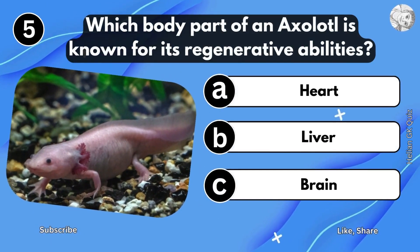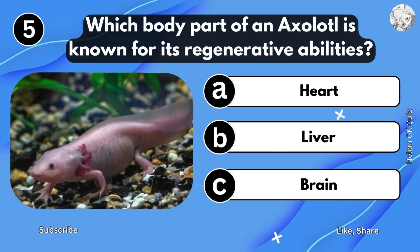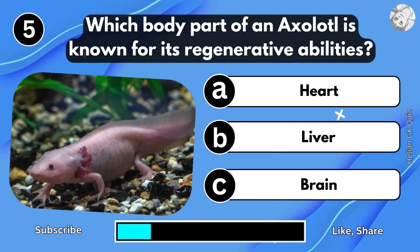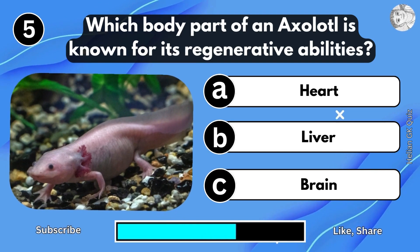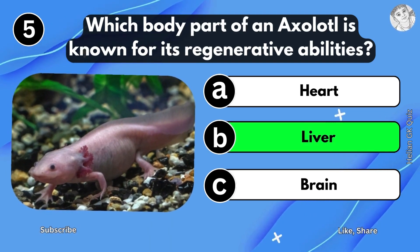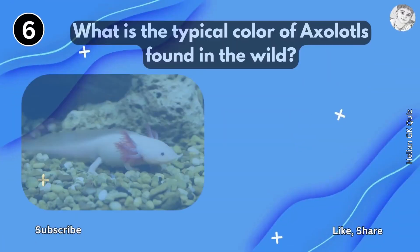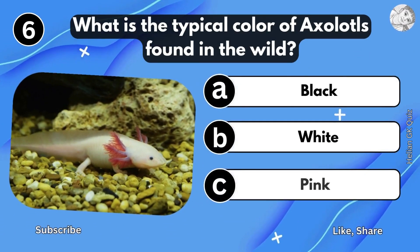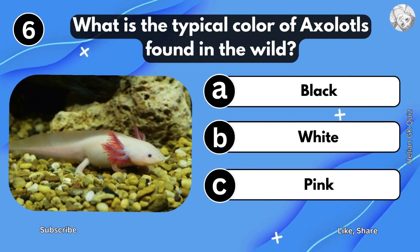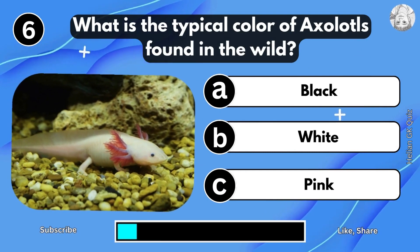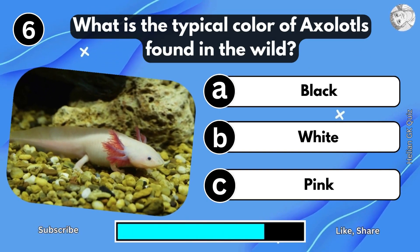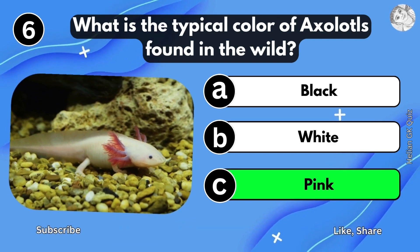Which body part of an axolotl is known for its regenerative abilities? Liver. What is the typical color of axolotls found in the wild? Pink.